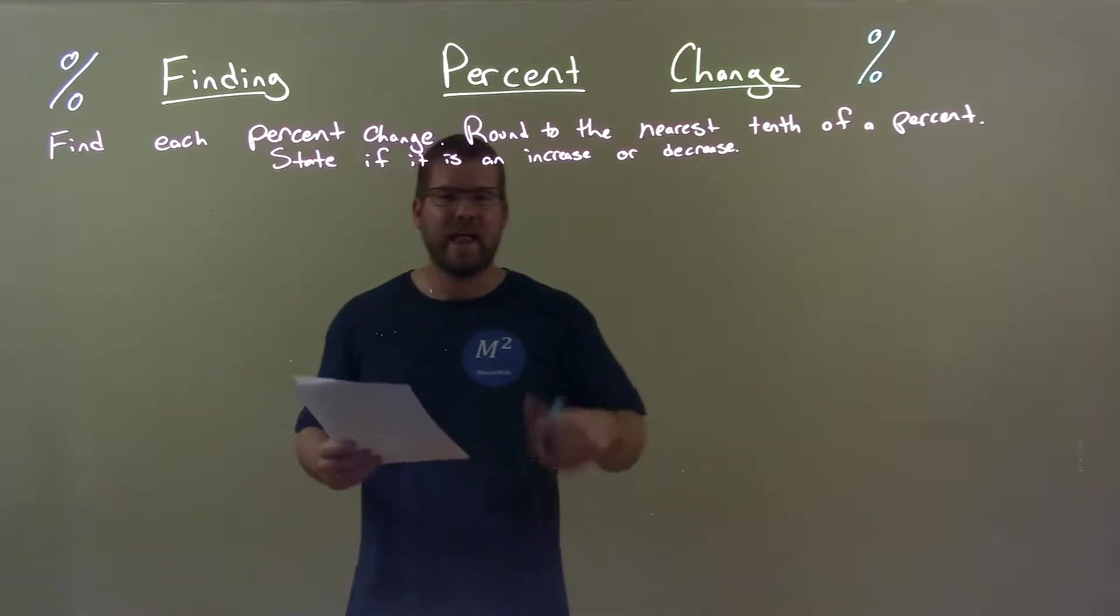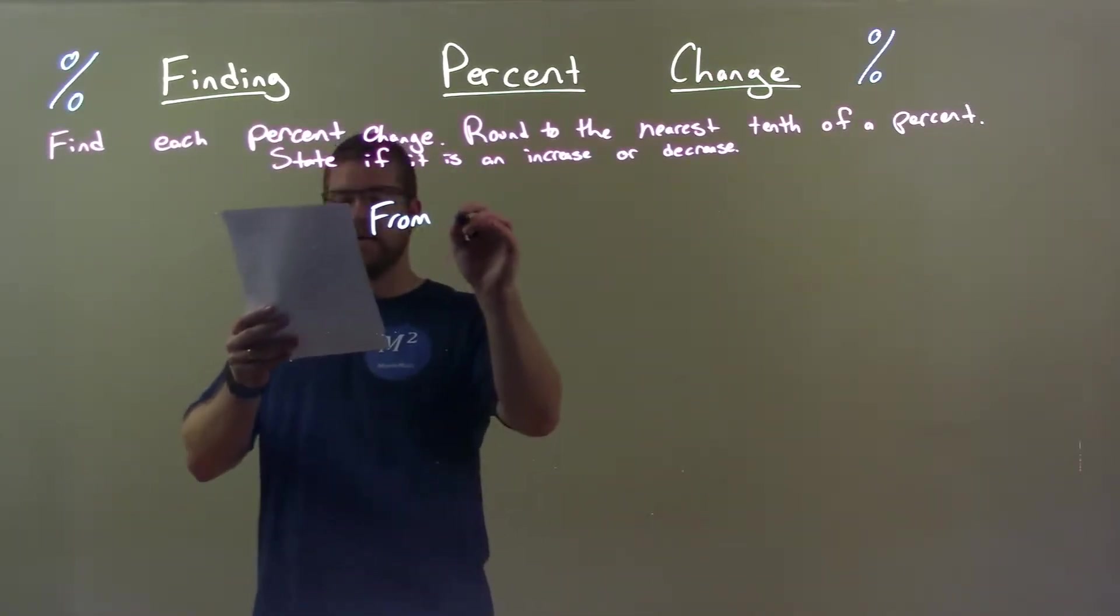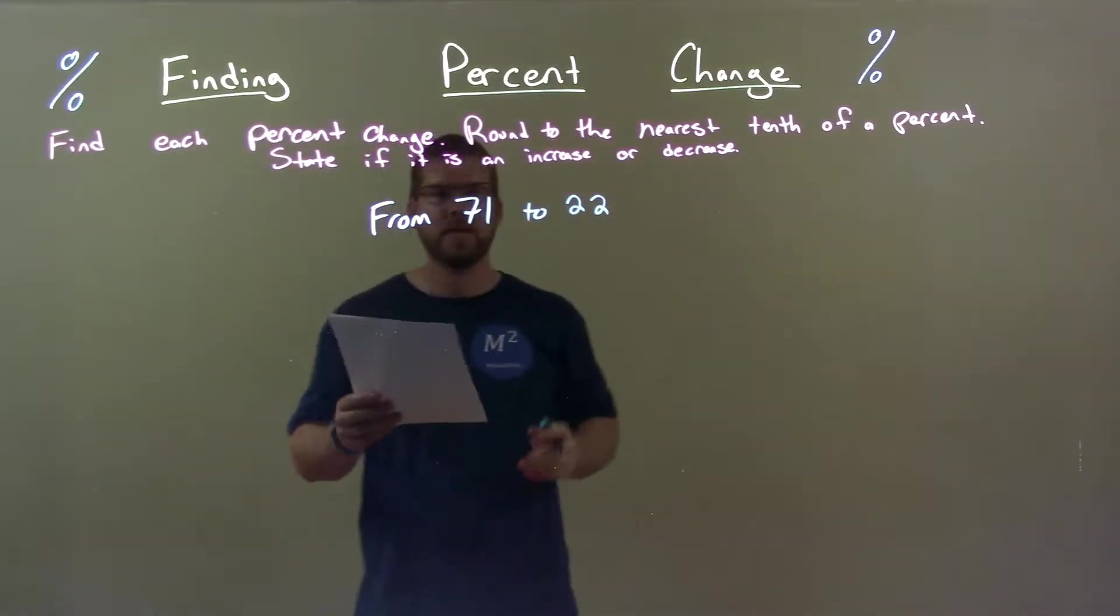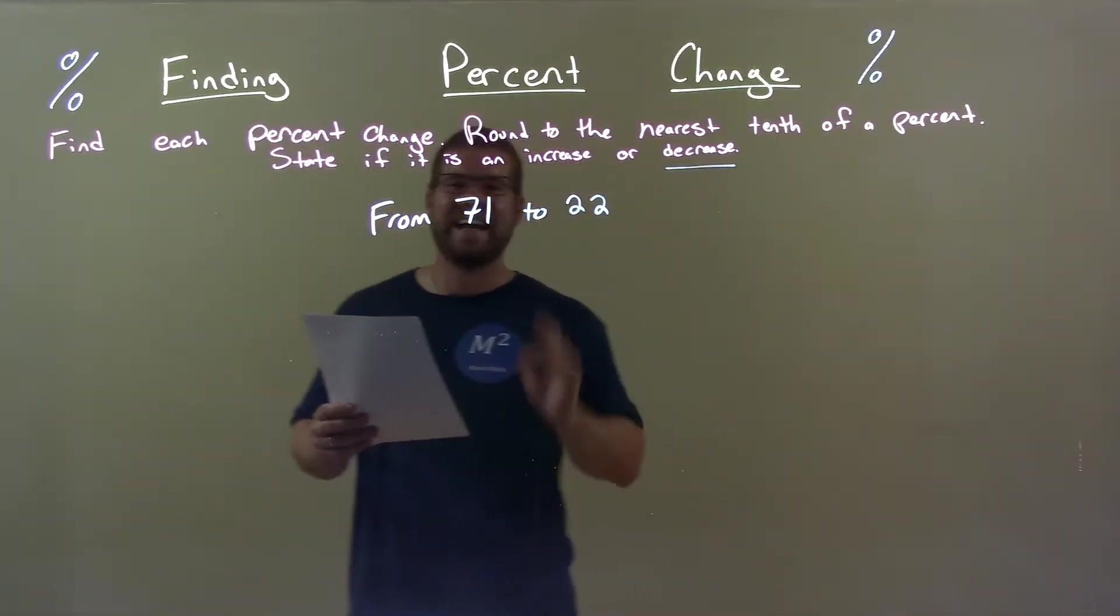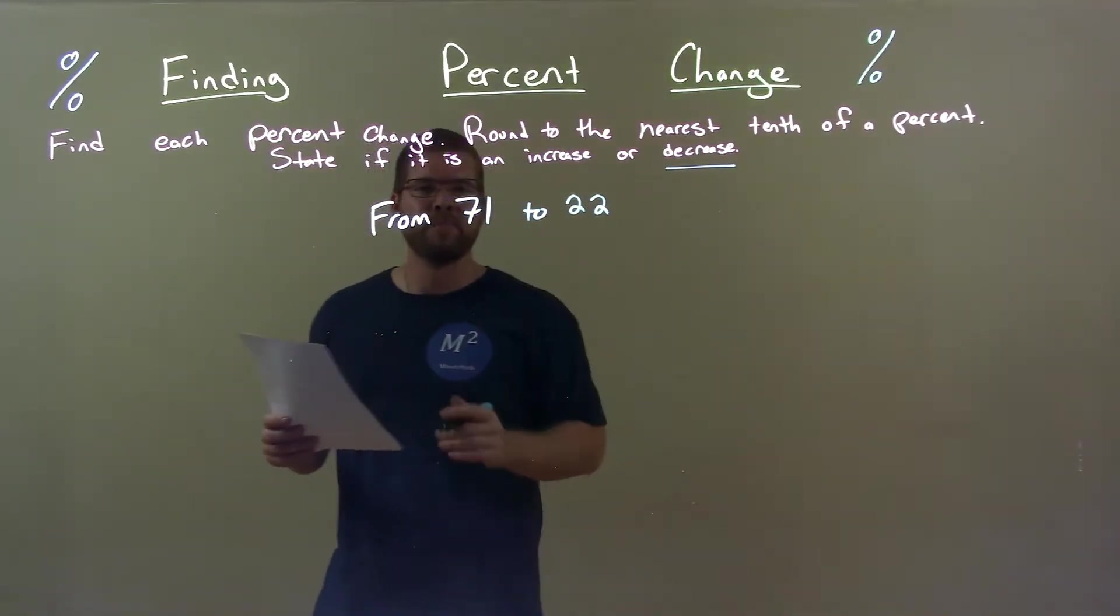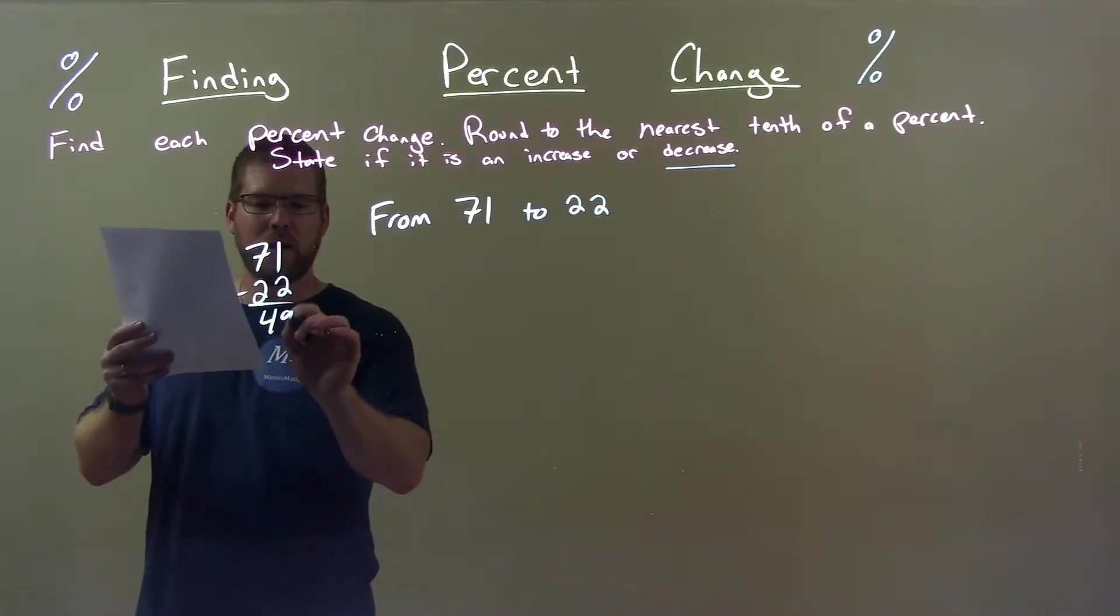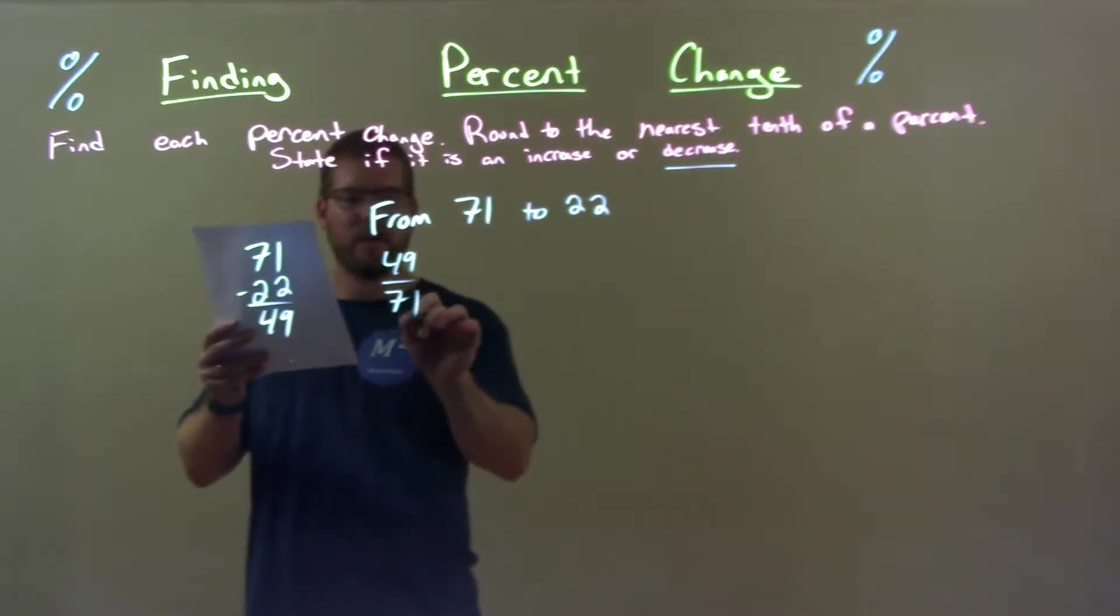So, if I was given this answer from 71 to 22, 71 to 22. Alright, well this is clearly what we call a decrease right there. Now, difference between the two. 71 minus 22 comes out to be 49. Take that 49 divided by the first number, 71.